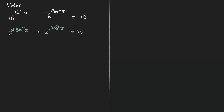After this, I'm going to change cos squared to 1 minus sin squared. That's coming from the identity: sin squared x plus cos squared x equals 1. Therefore, cos squared equals 1 minus sin squared by moving the sin squared to the other side. So we have 2 to the power of 4 sin squared x plus 2 to the power of 4 times 1 minus sin squared x equals 10.